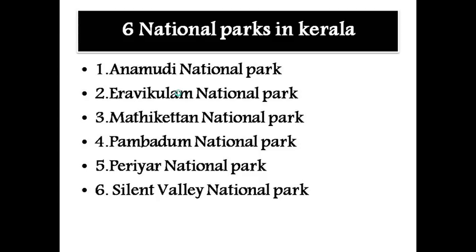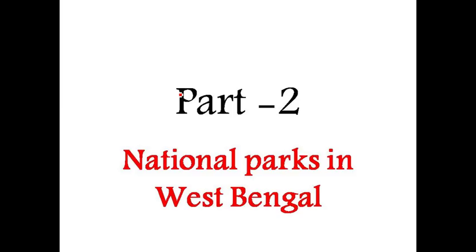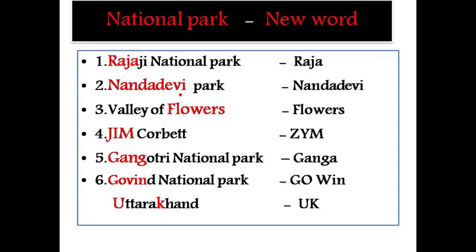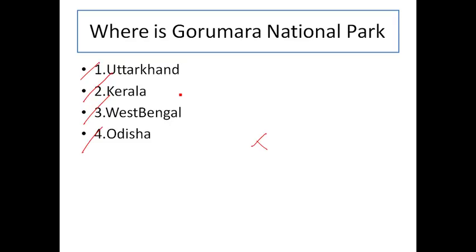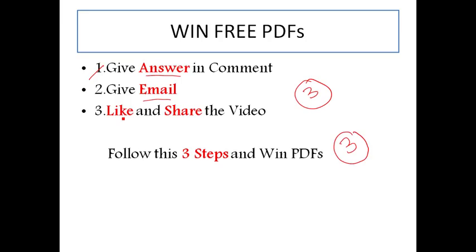Once again, from today I am going to give free PDFs to 3 students, based on 3 conditions. Daily I am going to ask one question: Where is Gurumara National Park? Option A: Uttarakhand, Option B: Kerala, Option C: West Bengal, Option D: Odisha. To win the PDFs, give the answer in the comment, write your email ID, and like and share. We will select 3 students and give you the free PDFs. Thank you friends, we will see in the next video. All the best.